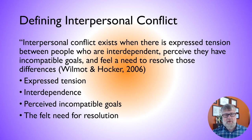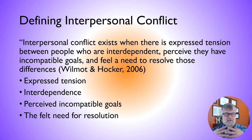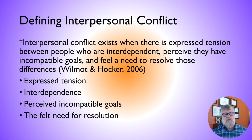Another definition, from Wilmot and Hawker in 2006, defines interpersonal conflict as existing when there is expressed tension between people who are interdependent, perceive that they have incompatible goals, and feel a need to resolve their differences. The primary components are expressed tension, perceived incompatible goals, and the felt need for resolution. If there is no felt need for resolution, then the conflict just continues on a low simmer.